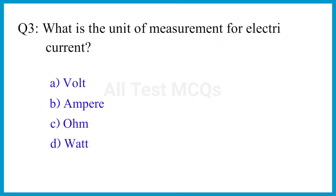Question number 3. What is the unit of measurement for electric current? The correct answer is option B. Ampere.